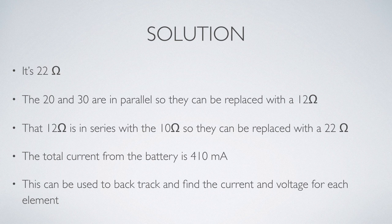For example, the 410 milliamp current is flowing in both the 10 ohm and the 12 ohm replacement resistor, so I could use that to calculate the delta Vs across each of them, delta V equals IR.